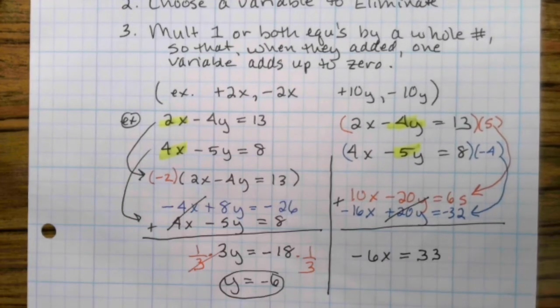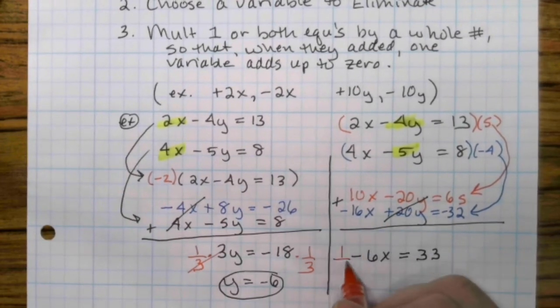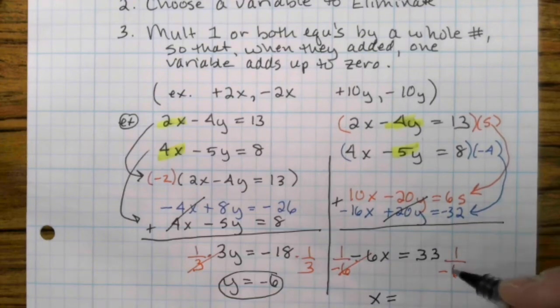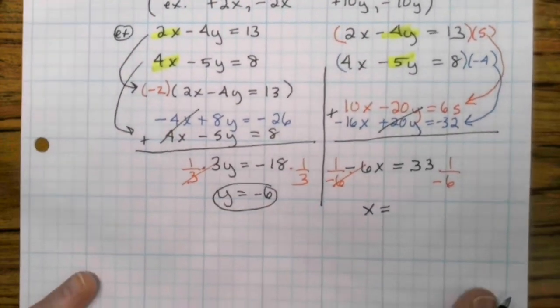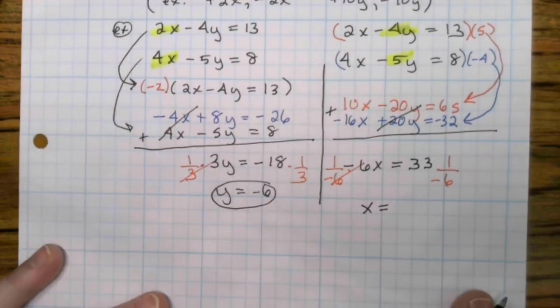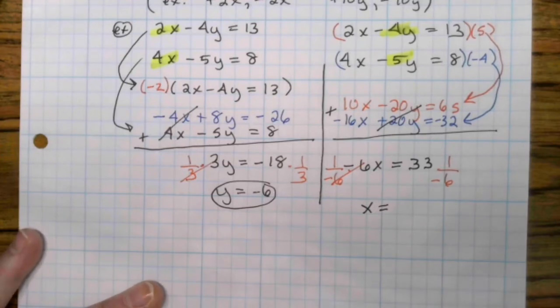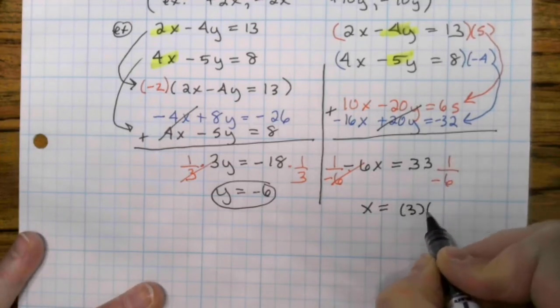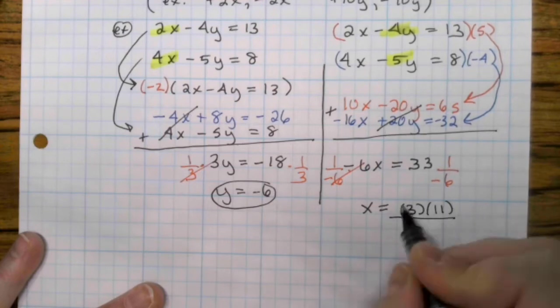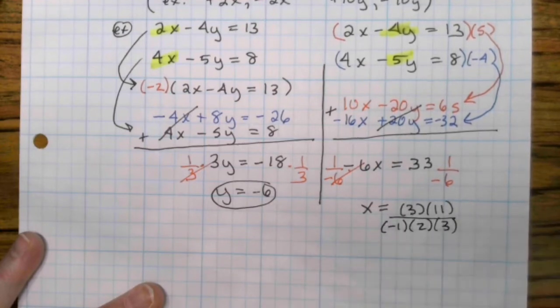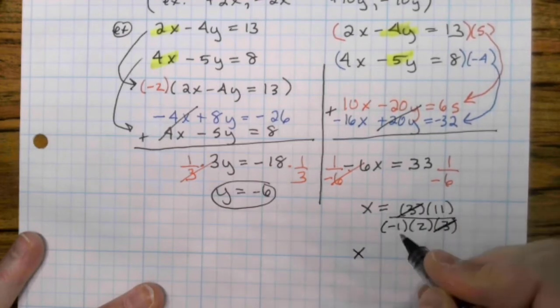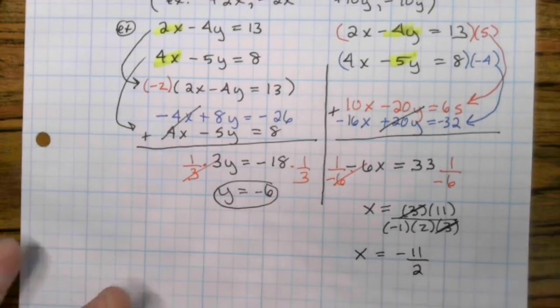All right. Get the x by itself. So on both sides, x equals. Now I can tell I can pull a 3 out of these. So I'm going to go ahead and just prime factor rather than stack it and then take it apart again. So 33 is 3 times 11. Negative 6 is negative 1 times 2 times 3. 3's divided out. You always move the negative up. I get negative 11 halves.